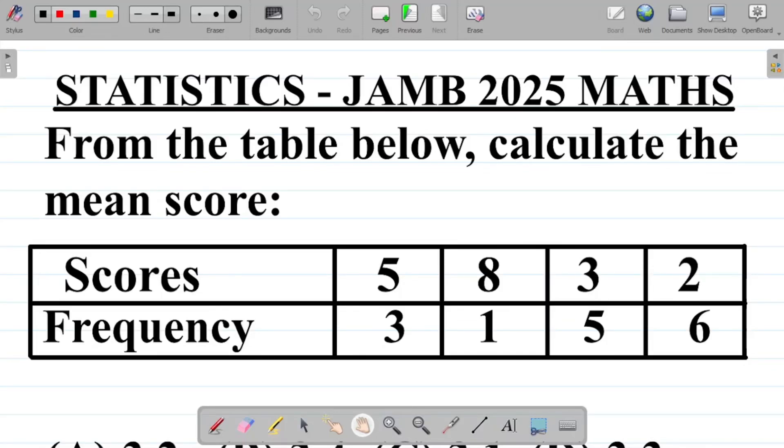In this video, we'll be trying to solve the JAM 2025 possible mass question on statistics. The question here says, from the table below, calculate the mean score. We're asked to find mean score.